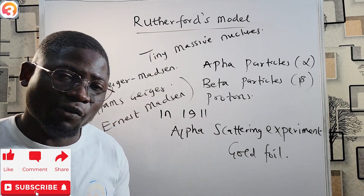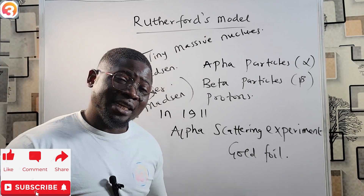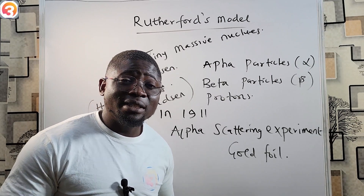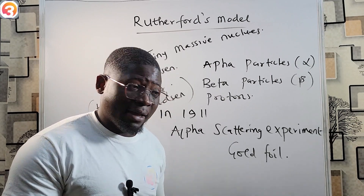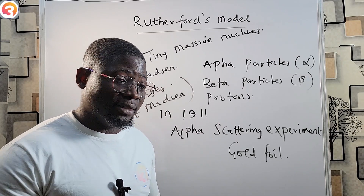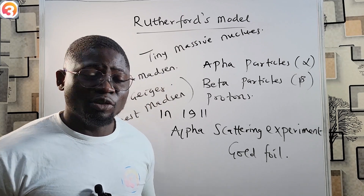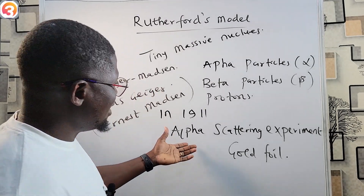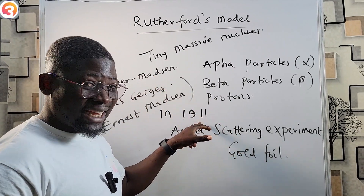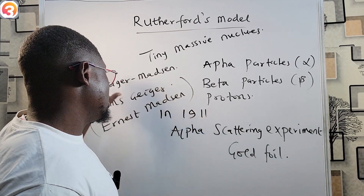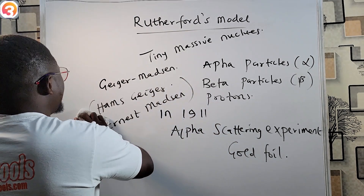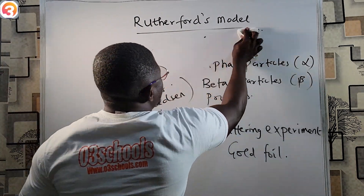Keep at the back of your mind that they may ask you: the alpha scattering experiment is also called which of the following? The answer is the Geiger-Marsden experiment. So you should know that the alpha scattering experiment carried out in 1911 — the year is very important — was also called the Geiger-Marsden experiment.